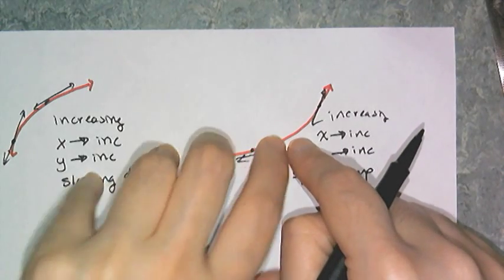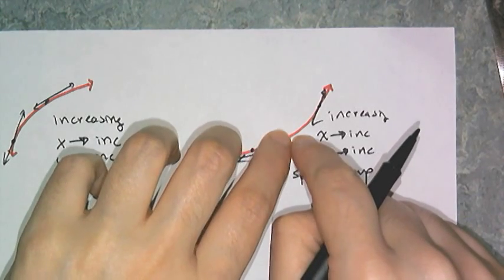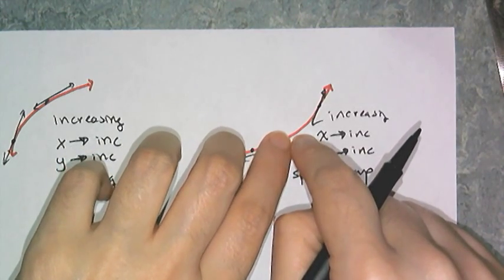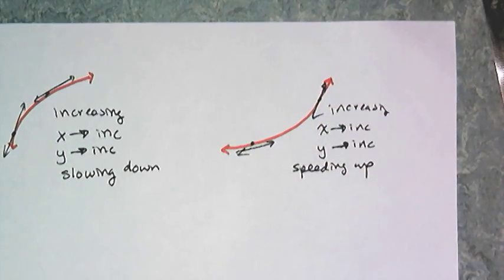you can start speeding up because the traffic starts to go away. So those are the two increasing curves. Let's look at the two decreasing curves.